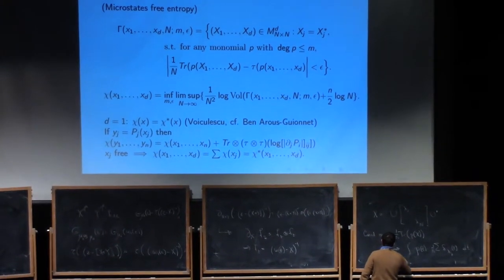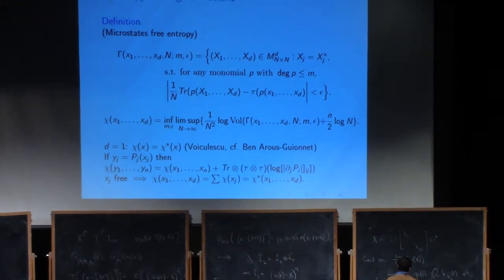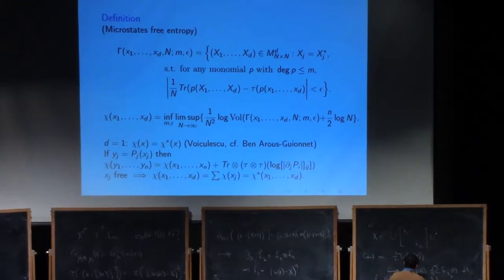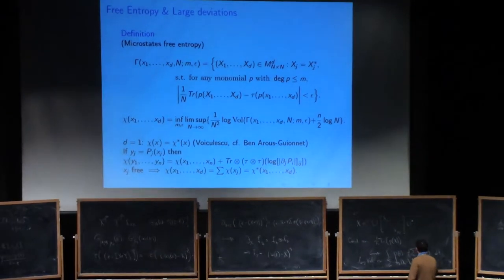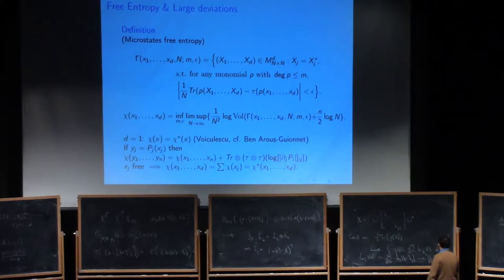And that will tell you that this logarithmic volume will be related to sum of log lambda i minus lambda j, and so that will, in the infinity limit, converge to the logarithmic energy. Plus, there's some constants that are involved in this normalization.